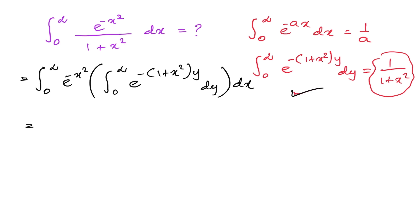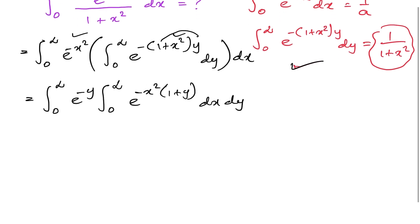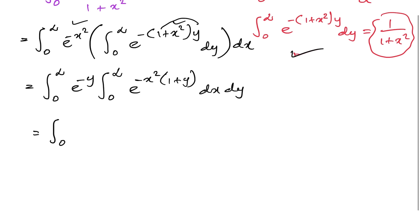As a next step, we separate the y factor: e to the minus y times the integral from 0 to infinity of e to the minus x squared times (1 plus y) dx dy. We can take minus x squared as a common factor, giving us the exponent minus x squared times (1 plus y).